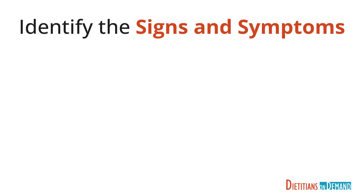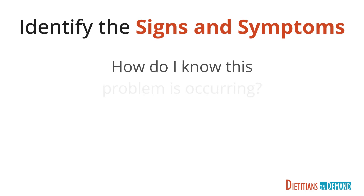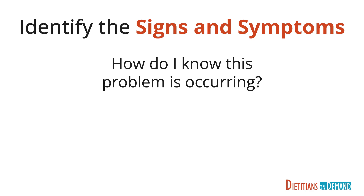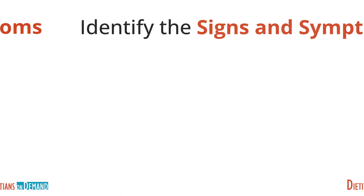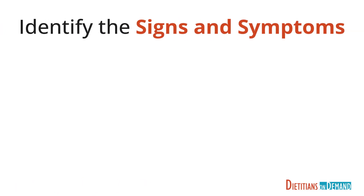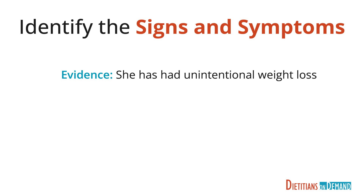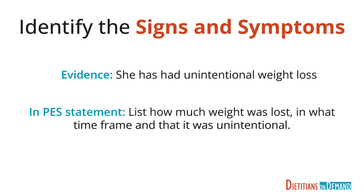The final step is to identify the signs and symptoms. Ask yourself, how do I know this problem is occurring? In the case of our patient, how do we know she is having inadequate energy intake? We can infer that based on her limited food recall, but the primary and most convincing evidence is that she has had unintentional weight loss. When writing your PES statement, you want to be as specific as you can with your signs and symptoms, so list how much weight was lost, in what time frame, and note that it was unintentional.